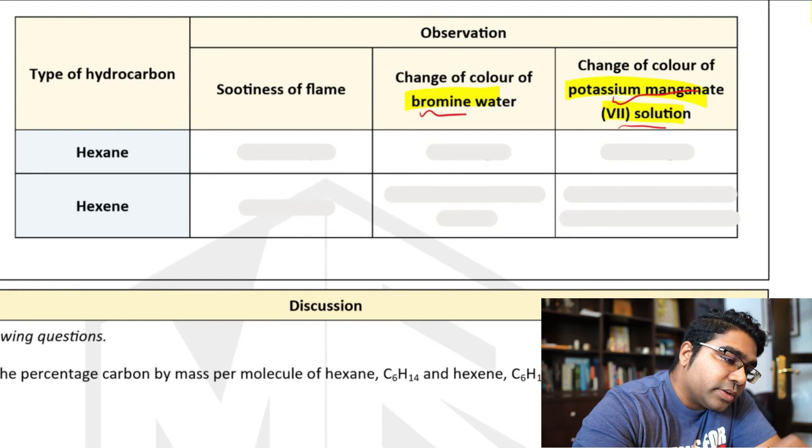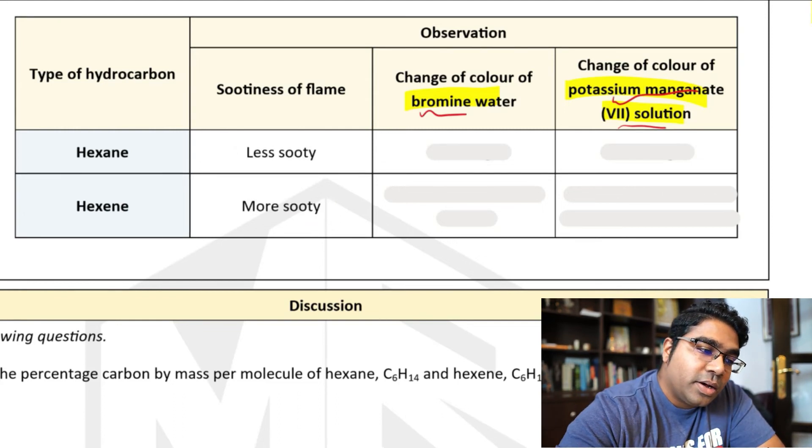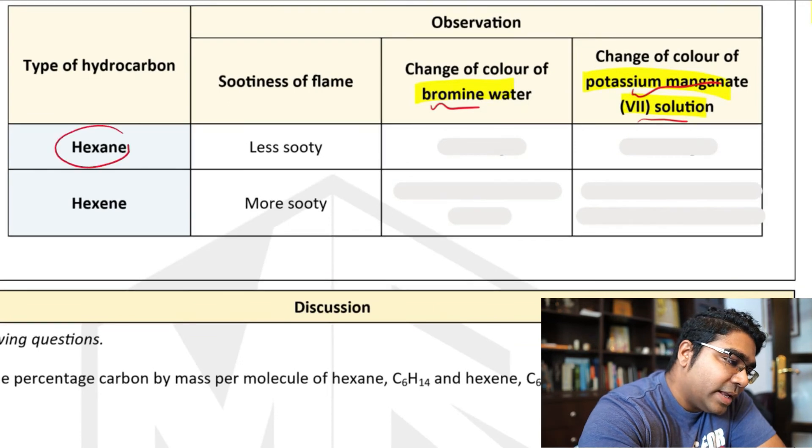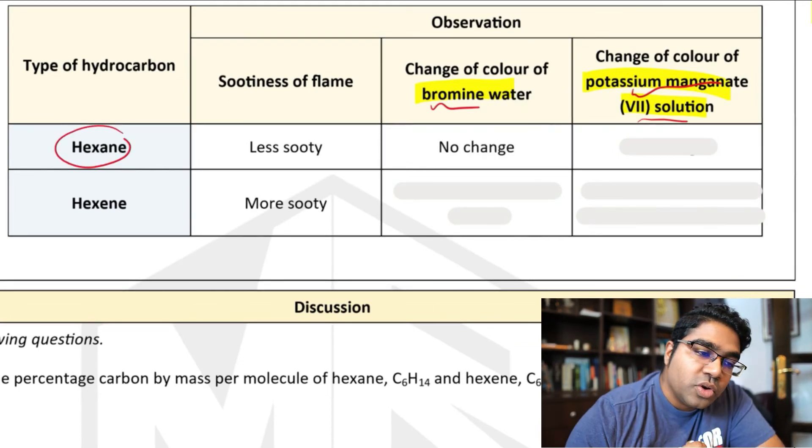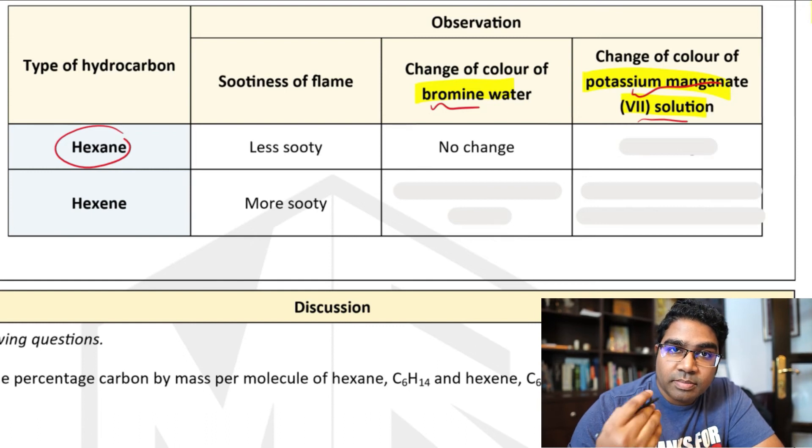And so sootiness of the flame we've already established. Now change in color of bromine water. For hexane, which represents the alkane here, 6-carbon alkane, there is no change. The bromine water remains brown in color.